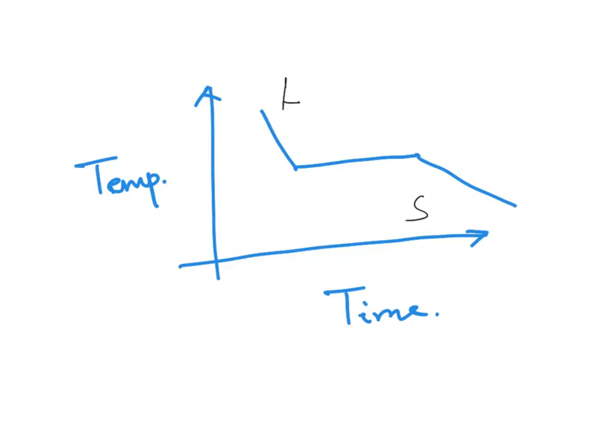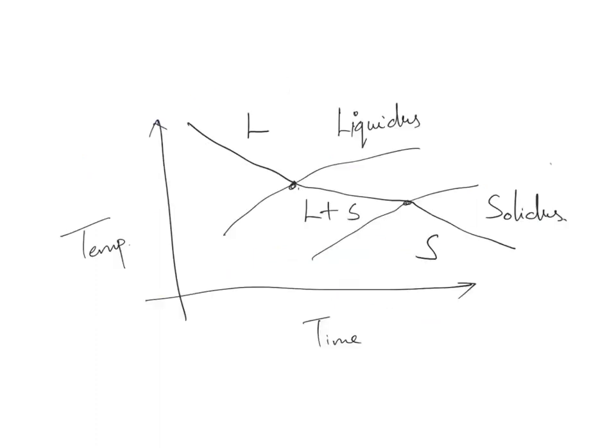Again, let me show you this with the help of a figure. As you can see here, when I'm bringing down the temperature of my particular alloy—let's say this is a steel alloy—there is a particular line called liquidus. Once our cooling line encounters this point, the process of solidification begins and continues.